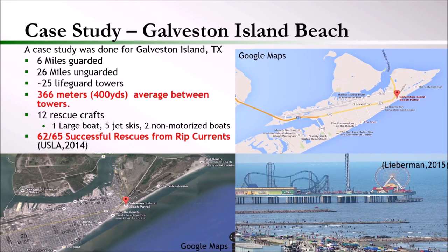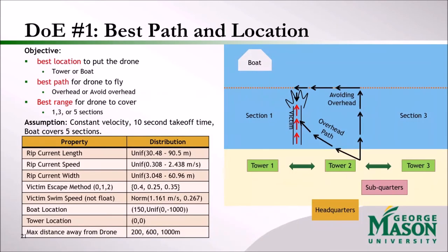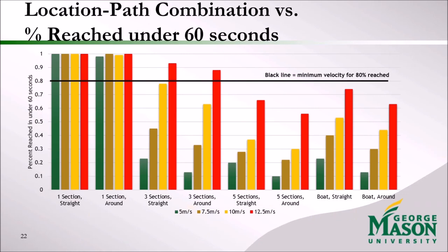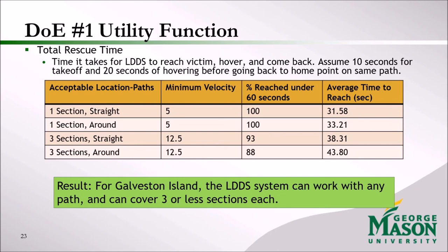For further experiments, we considered a case study of whether a certain beach needs a drone. The beach selected is Galveston Island Beach. Our first experiment determines the best path location and operation range. Shown on the right are the paths and locations considered, and on the bottom left are the distributions used. The y-axis is the percent of victims reached in under 60 seconds; the x-axis is all the location, path, and range combinations considered. We want a threshold of 80% of victims reached in under 60 seconds, shown as the black bar. Our system can work with any path and can cover three sections or fewer at the tower.